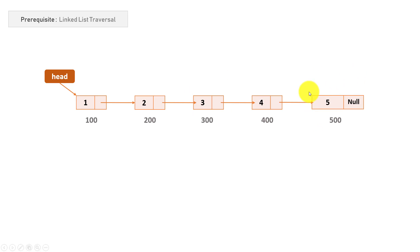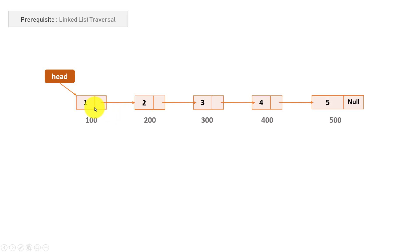If we discard the fifth node, then nodes 1, 2, 3, 4 are present and 2 is the middle node. From simple logic, to find the middle of anything we divide by two. So we take the length of the linked list and divide it by two to find the middle element. After finding the middle element number, we traverse the linked list up to that element, and that element will be the middle element.